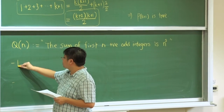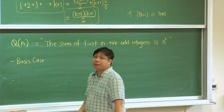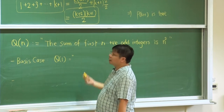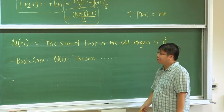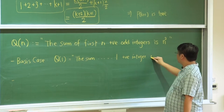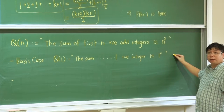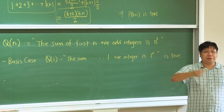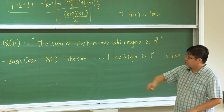We want to prove two things. The first is the basis case. The basis case is Q(1). Q(1) is the statement: the sum of the first one positive odd integer is 1 squared. We know that this is true. So at this point we have proven the basis case. The basis case is usually very easy — you just need to check it.